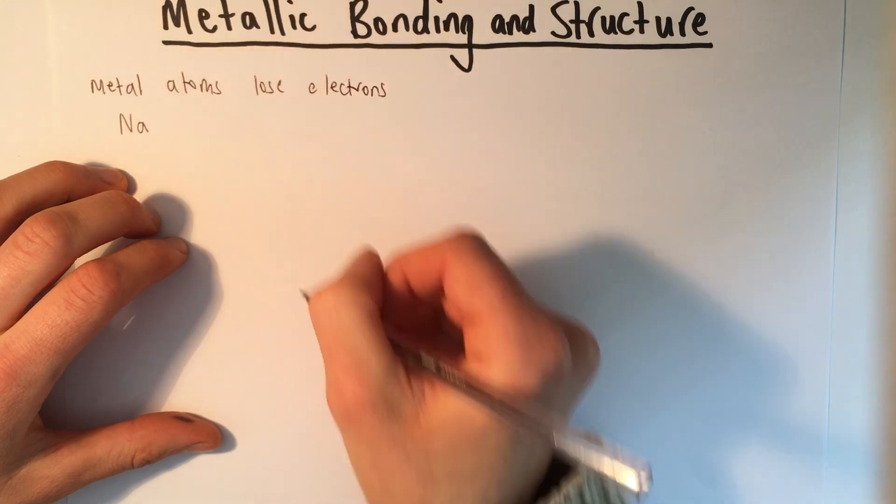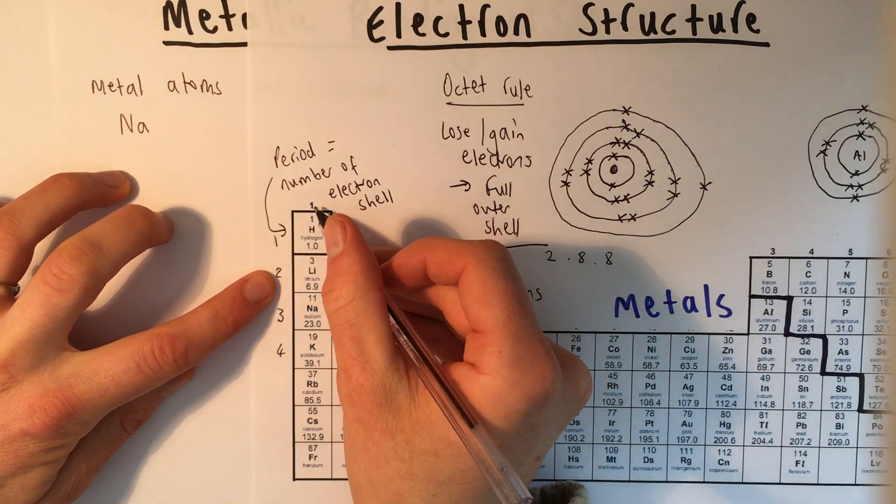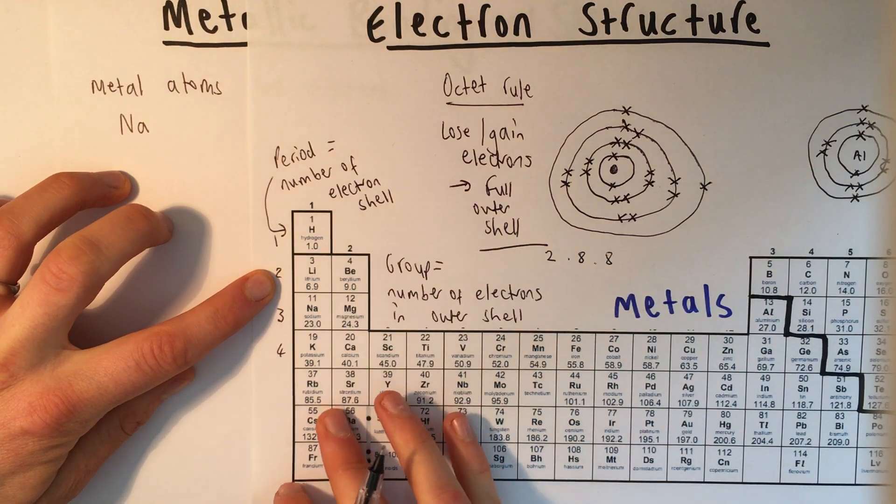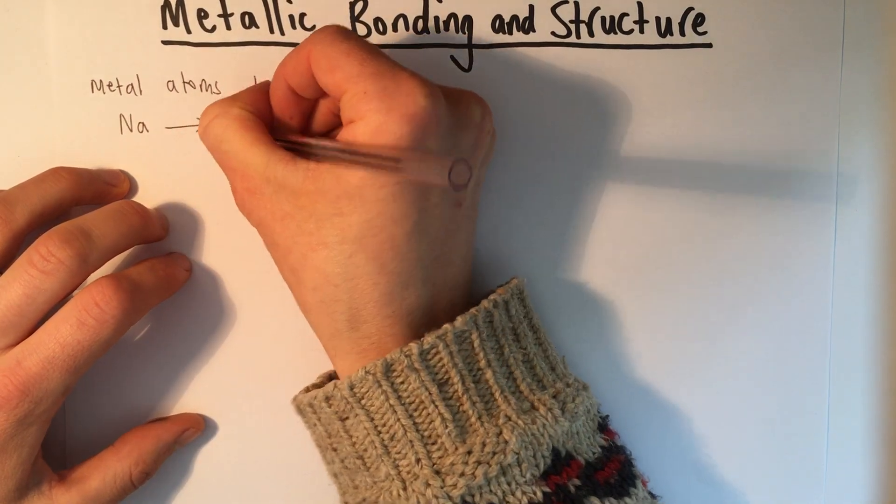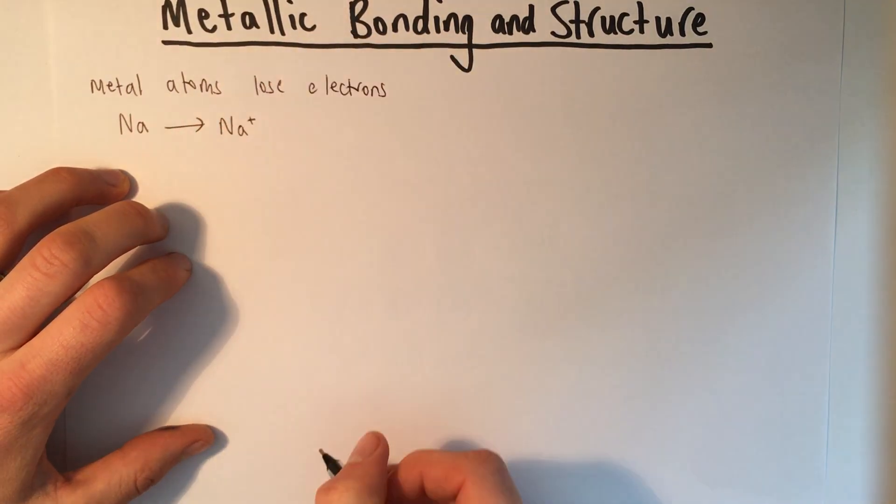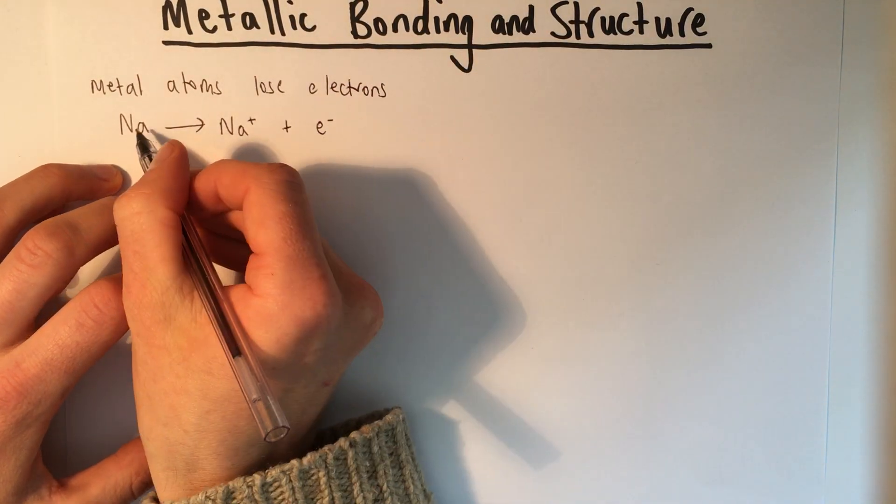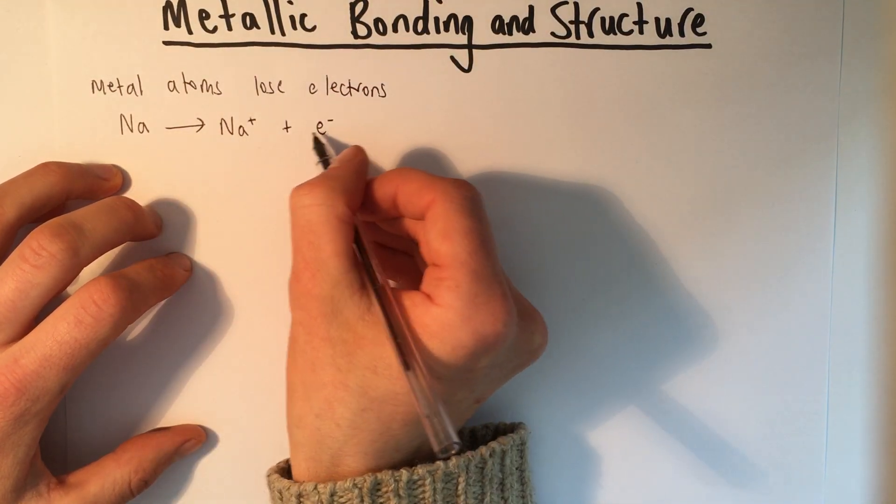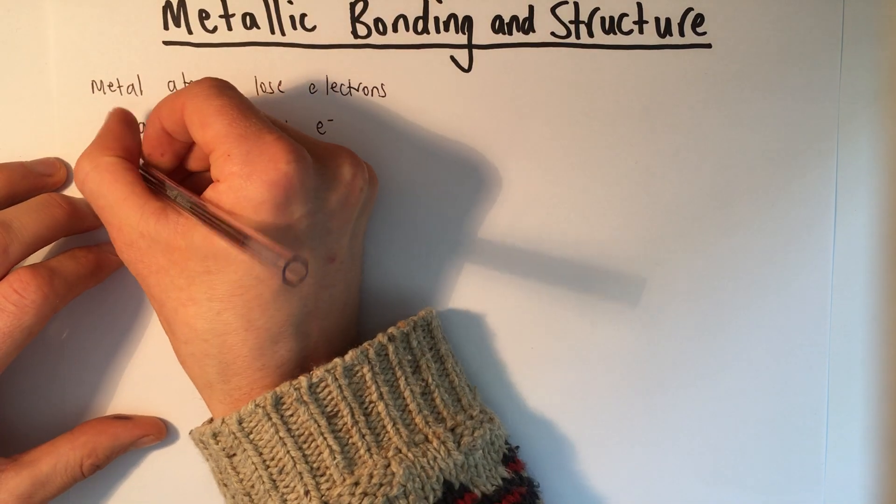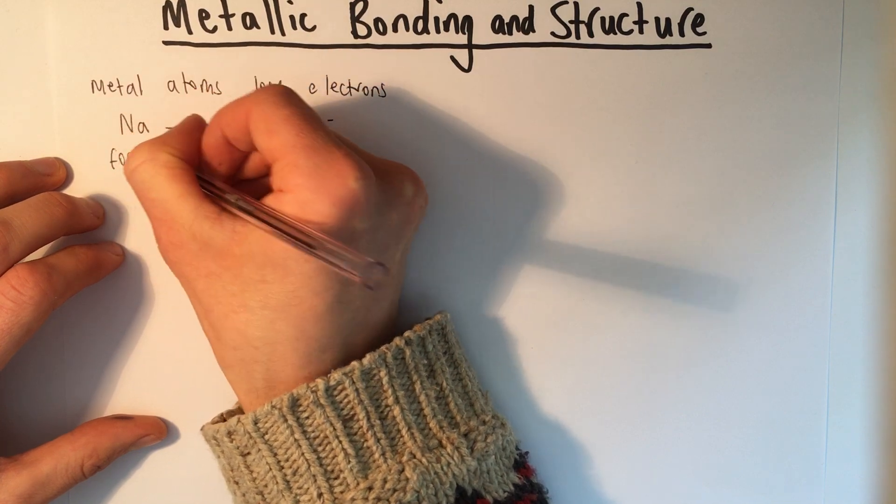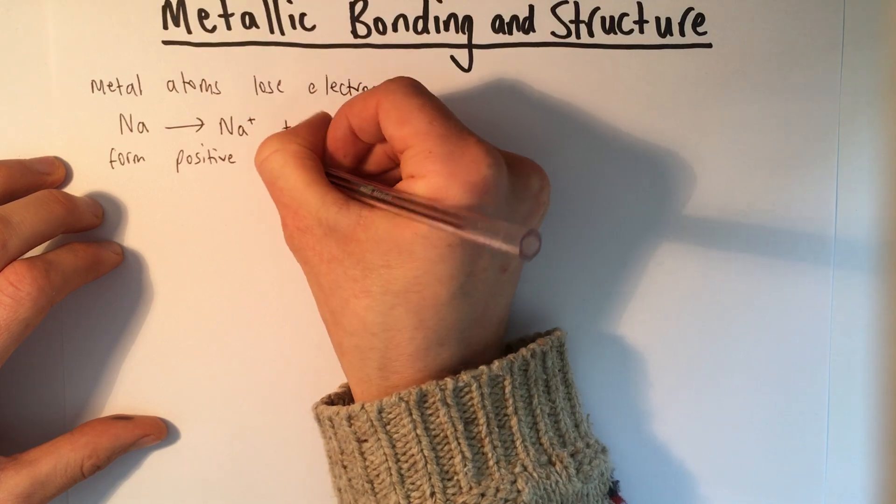If that's a sodium atom, because sodium is in group 1, it's going to lose one electron in order to get a full outer shell. I show that by showing that it makes a sodium ion and loses an electron, so the electron at the end is now separate from the atom. And because it's lost a negative electron, it becomes a positive ion, and we call that a positive cation. So they form positive cations.